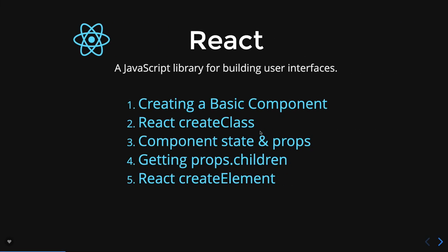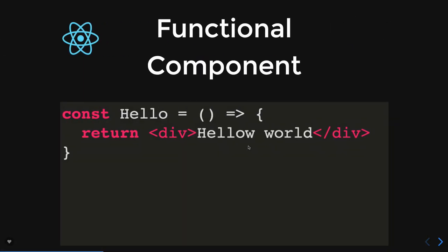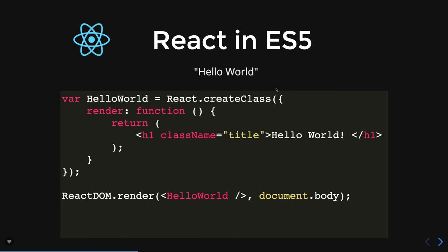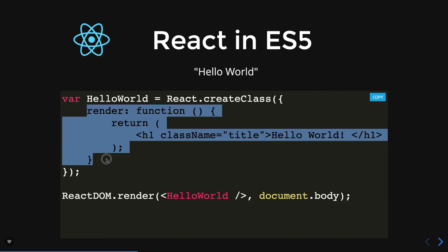Now we need to understand these two concepts — props and state — so let's move back to the slides. React.createClass is something used in ES5. Now we're talking about state and props. React.createElement is the method we've seen when compiling JSX to ES5. The ES6 class syntax is: class Welcome extends React.Component, and in the render function you write your JSX. A functional component can be written simply as a const returning some JSX.